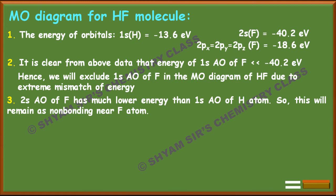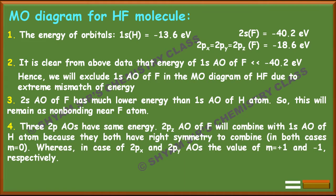Now, the 2p orbitals — 2px, 2py, and 2pz — all have the same energy. The 2pz atomic orbital of fluorine will combine with the 1s atomic orbital of hydrogen because they have the right symmetry, with magnetic quantum number m = 0 in both cases. For 2px, m = +1, and for 2py, m = -1, so there is a symmetry mismatch, and they cannot combine with the 1s of hydrogen.